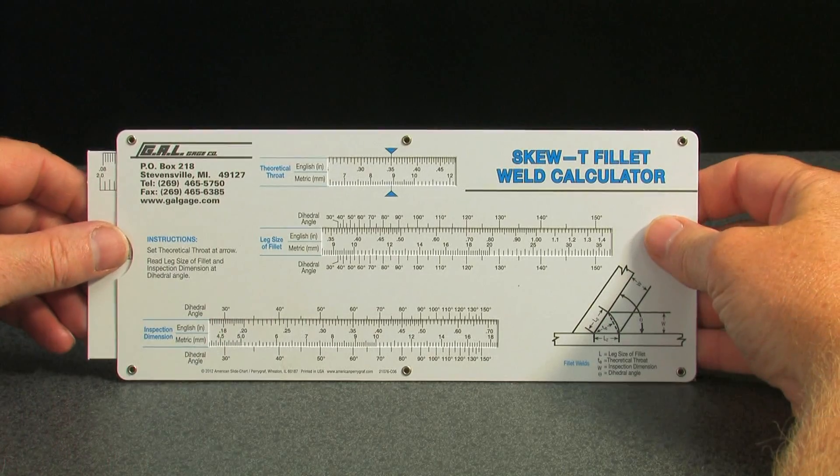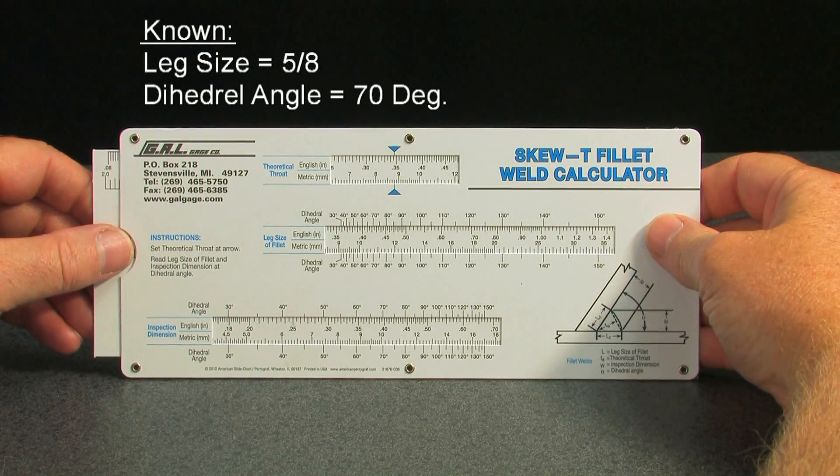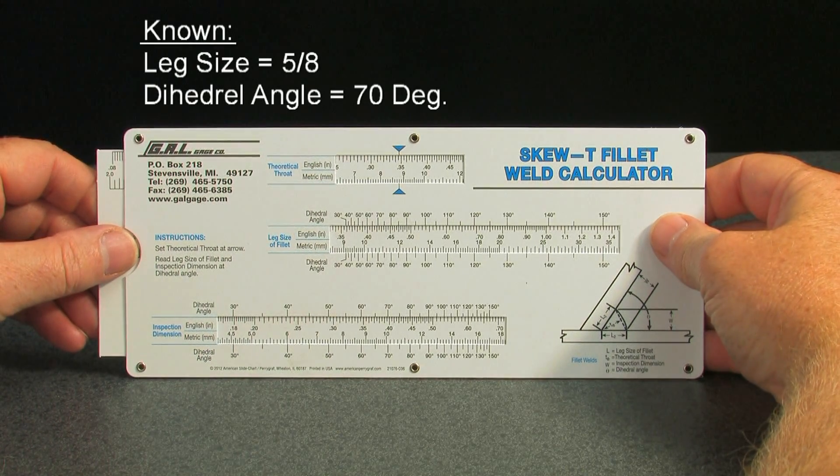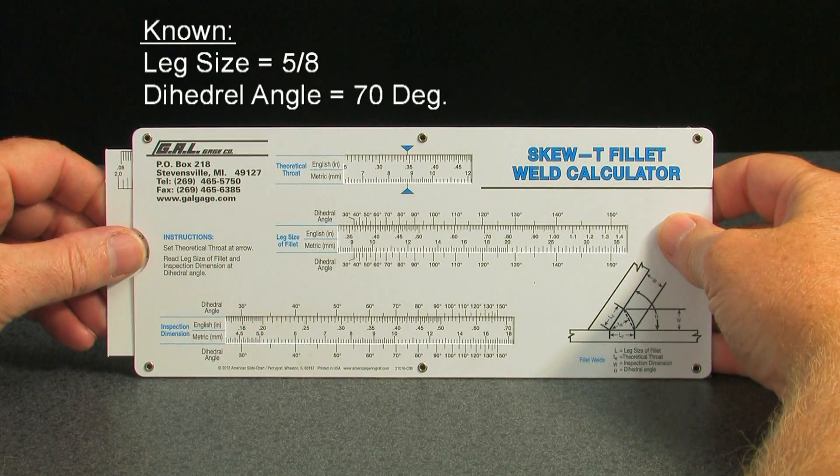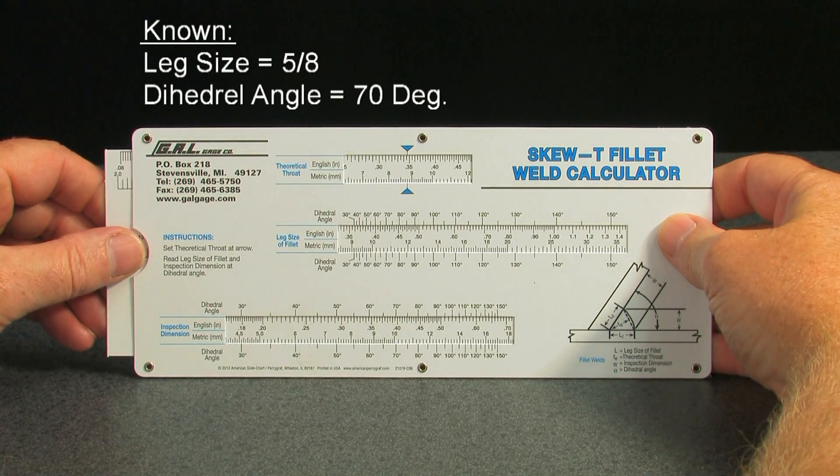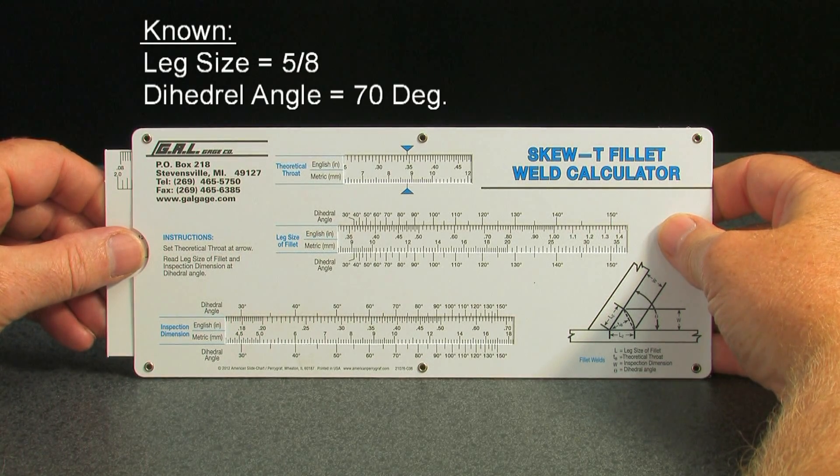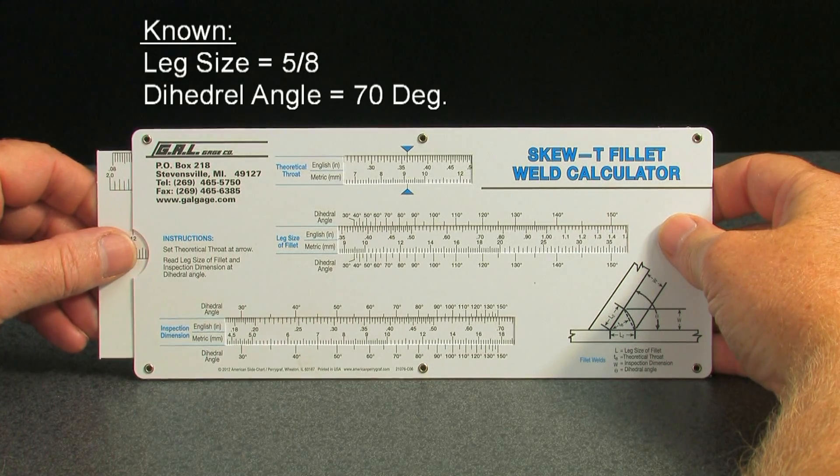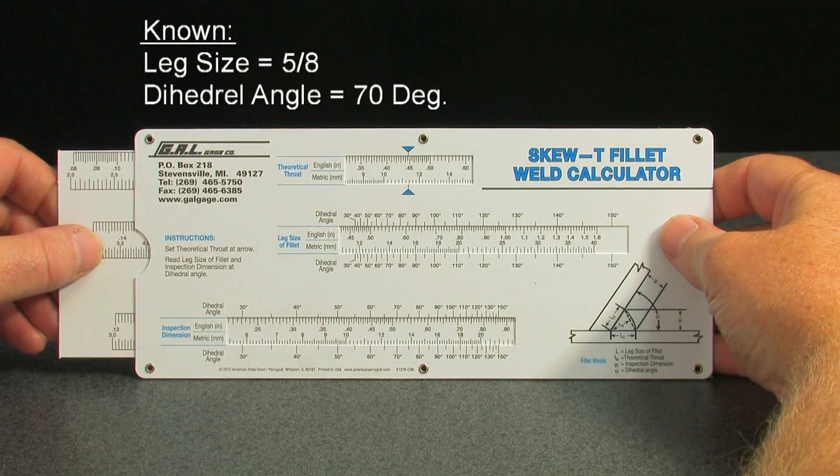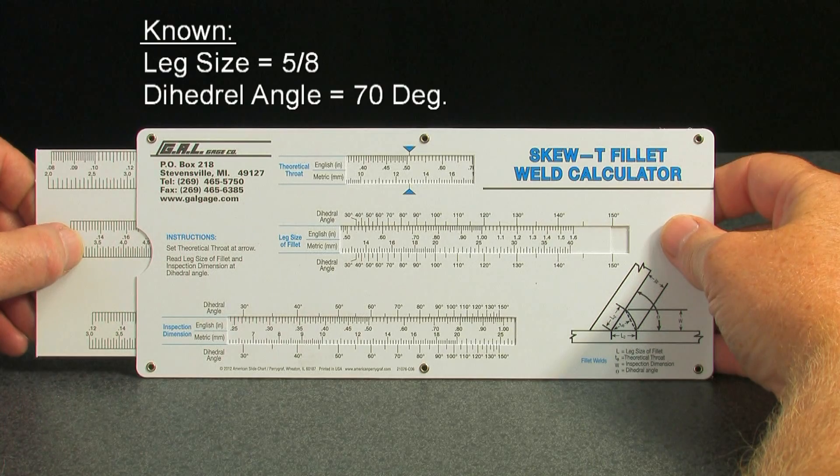Let's say a leg size of 5/8 inch, or 625 thousandths, and a dihedral angle of 70 degrees is given. Slide the inside card until the 5/8 dimension lines up with the 70 degree dihedral angle.